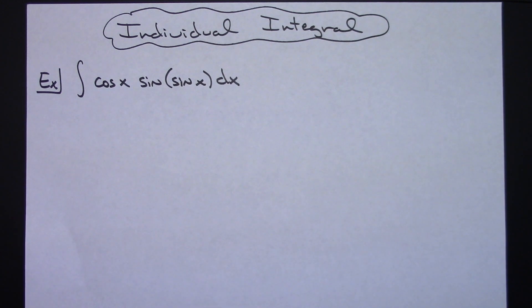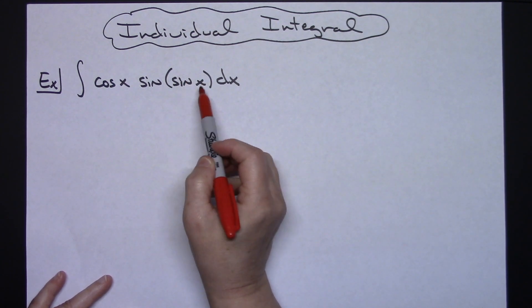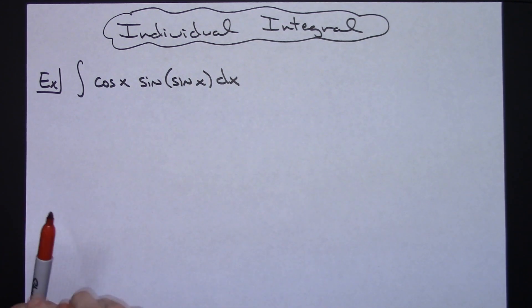It is going to be a straight u substitution integral, so I'm going to look for the most inside part of my function which is going to be this sine x right there, and I'm going to let my u be that sine x.